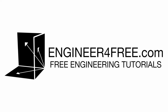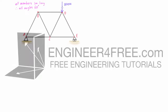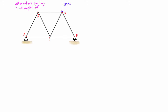In this video I am doing an example on how to use the method of joints to solve a truss problem in statics. Here we have our truss — it's pretty simple, there's just one externally applied force and it's simply supported. All of the members are one meter long, so all the triangles are equilateral and every angle is 60 degrees.